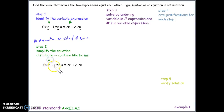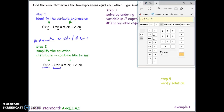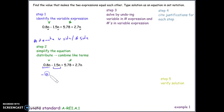On the variable side, we can combine like terms: 0.8n and negative 0.15n. Using a calculator, those combine to give negative 0.7n. We must include the variable since we're combining like terms that contain a variable.